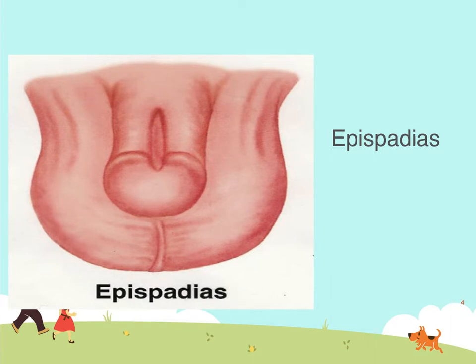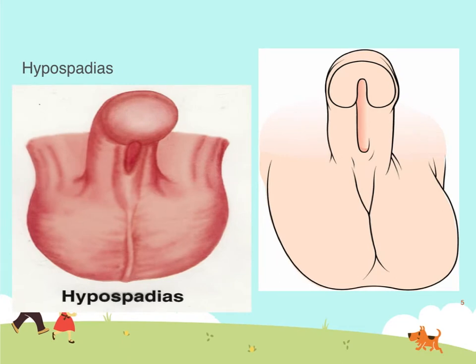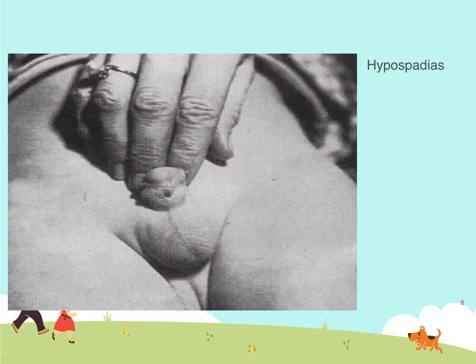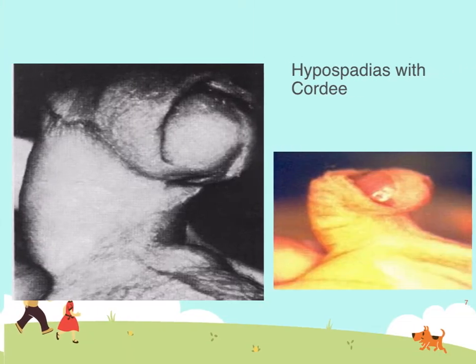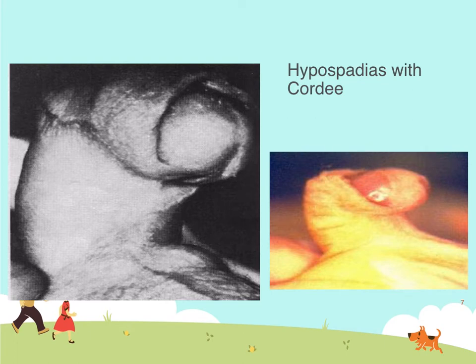Here's another picture of an epispadias, and here's a picture of a hypospadias. Sometimes these disorders are associated with the bladder being on the outside surface of the abdomen. Here's another hypospadias — we actually found one of these in clinical in the fall. And here is a hypospadias along with a chordee.